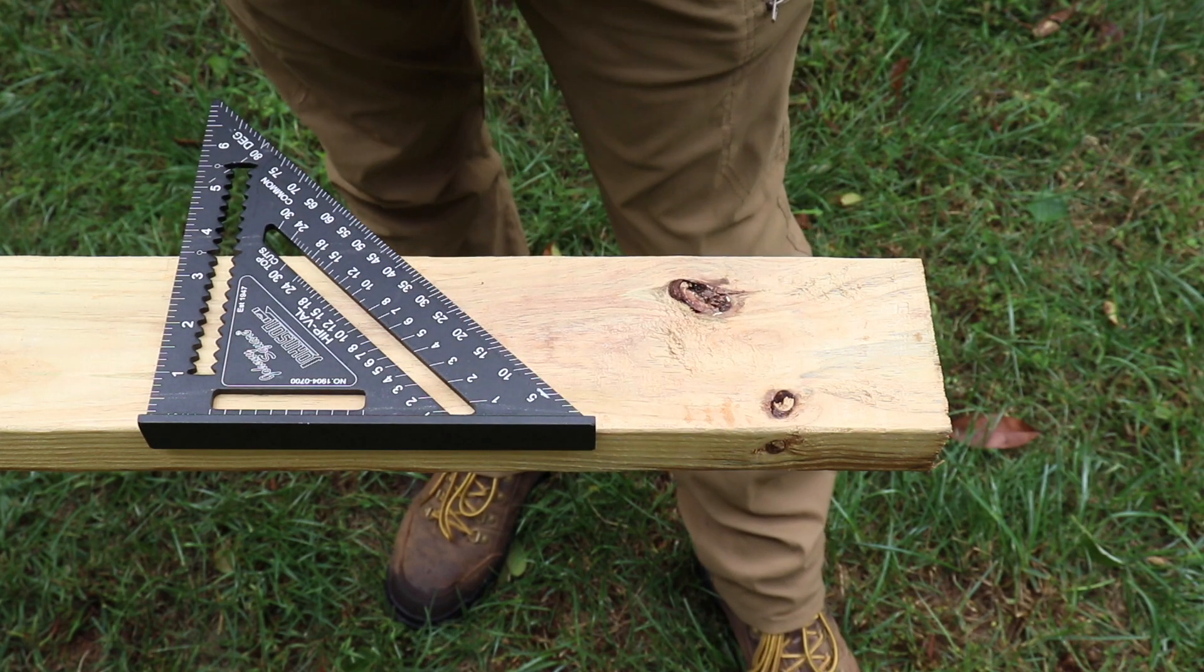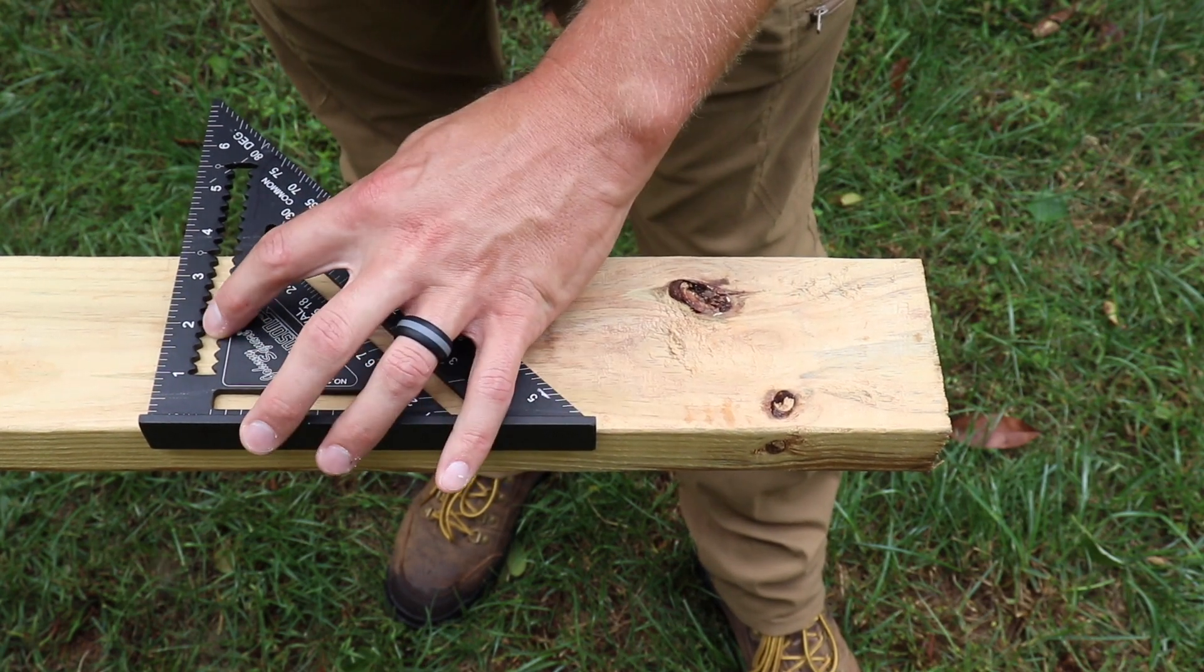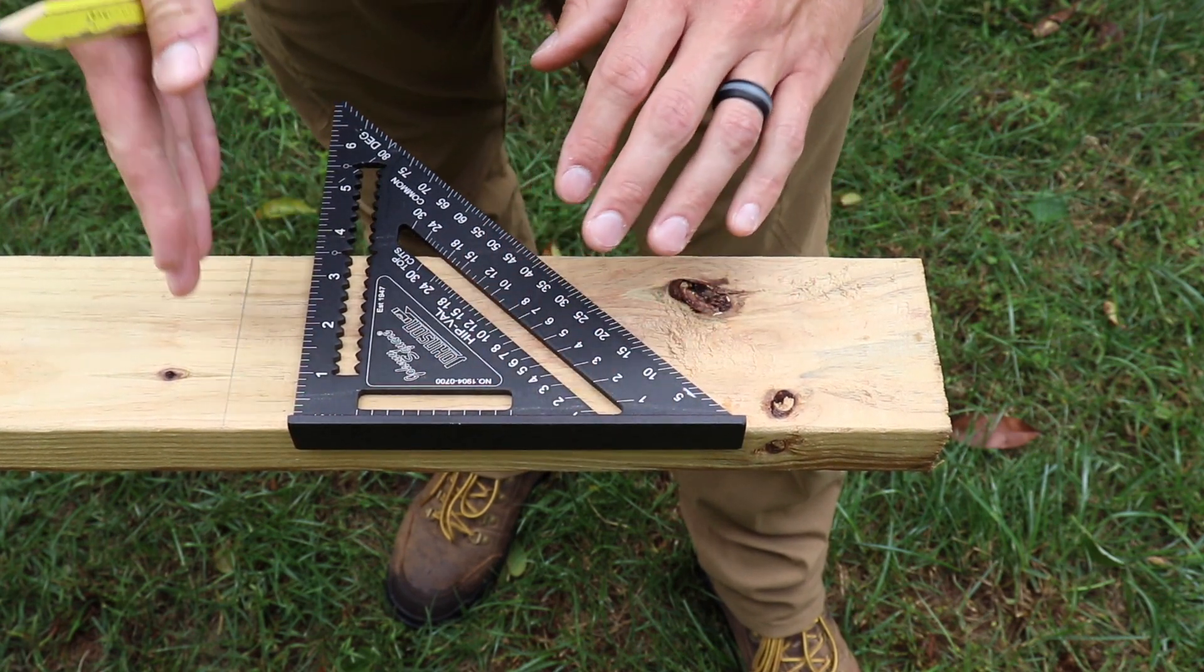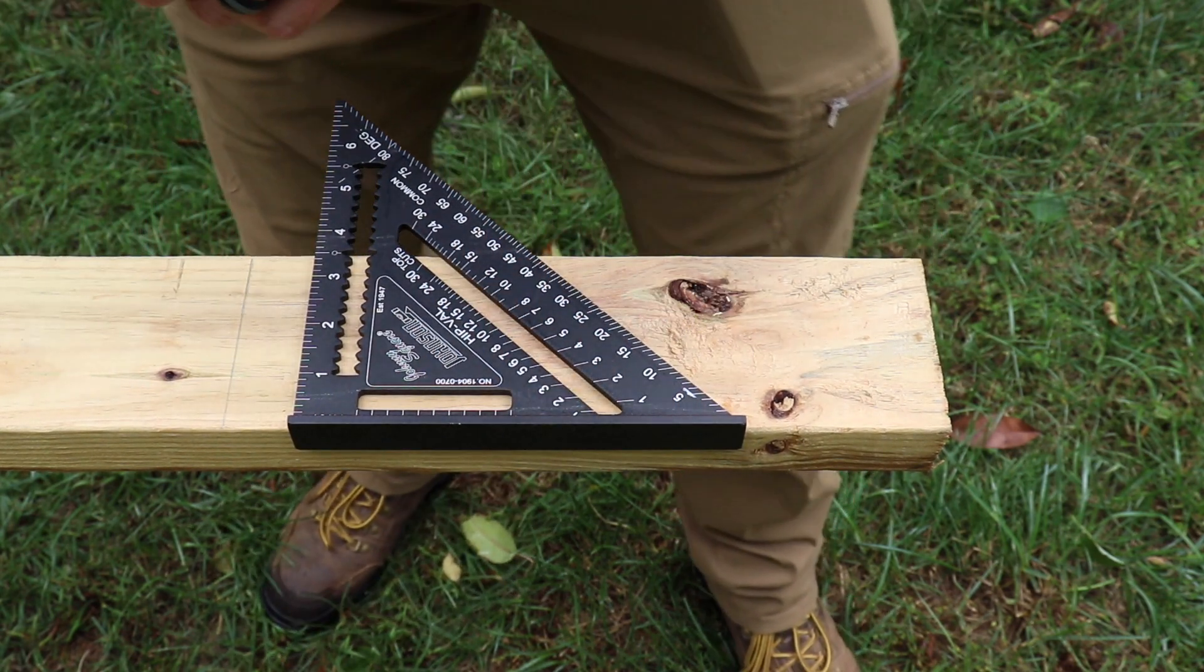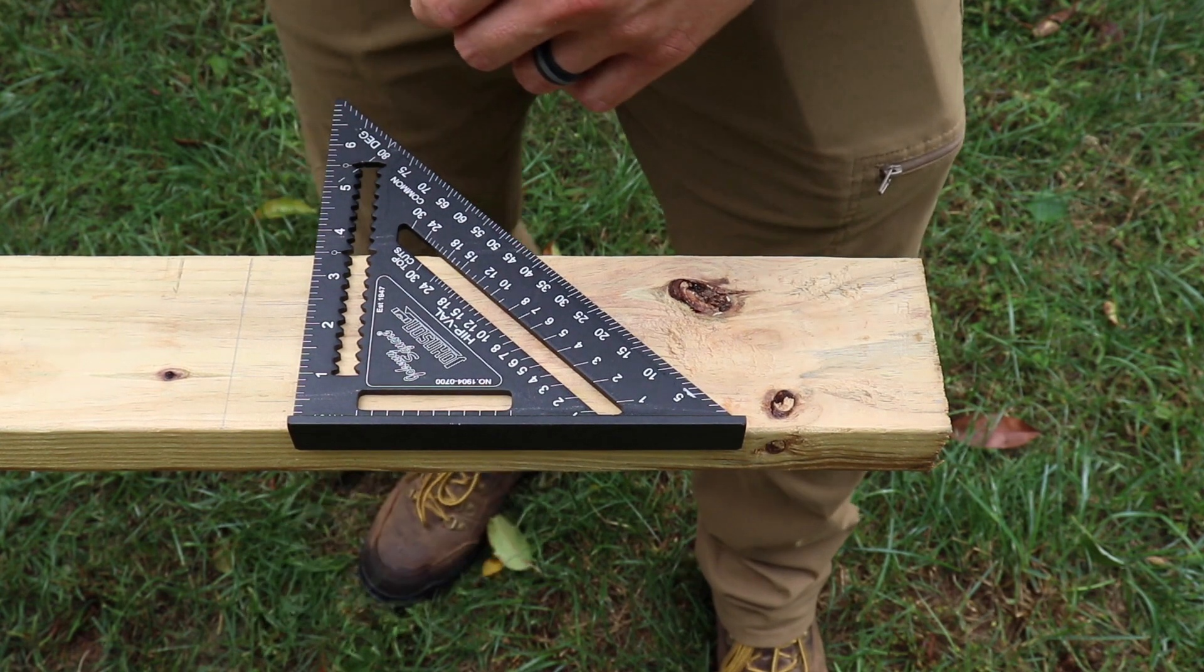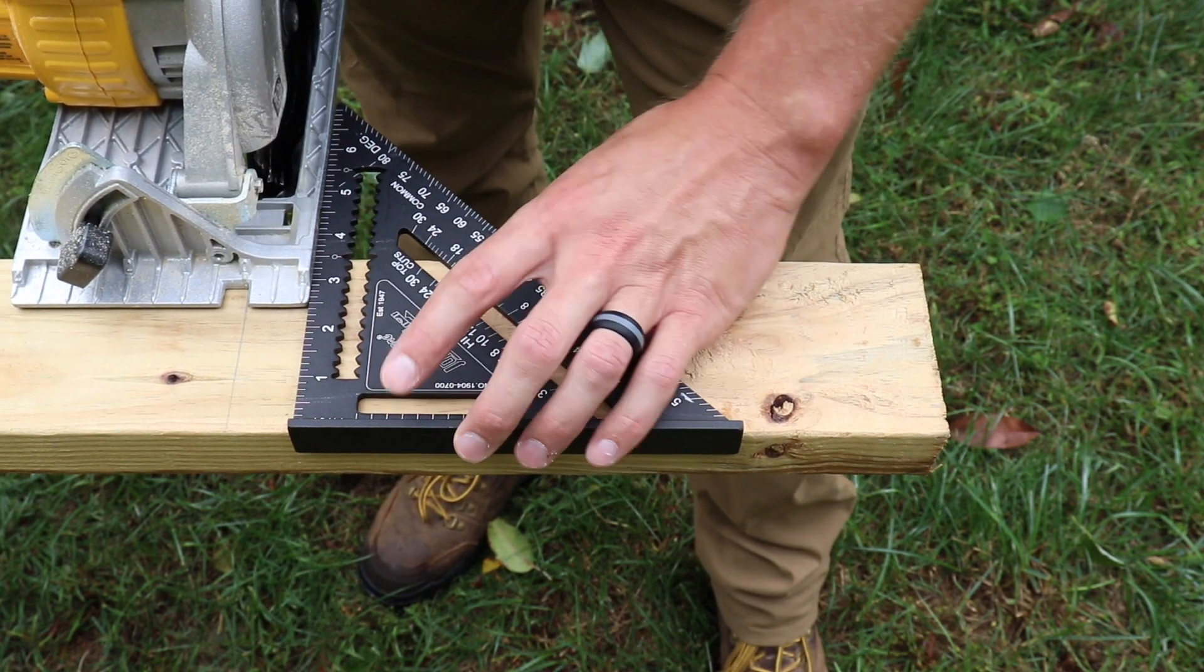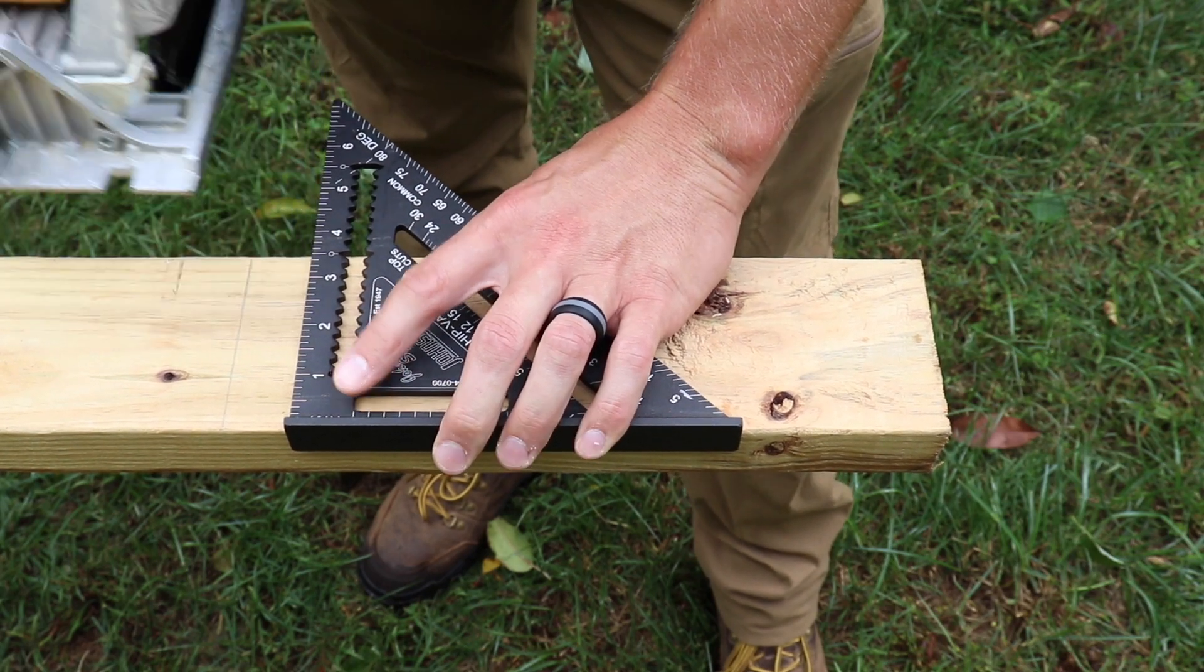Another thing you can do with your speed square is to use it as a saw guide. So let's say you have a mark here and you want to make sure that you get that cut perfectly straight. You can just line your saw up with that mark and hold your speed square in place and make that cut.